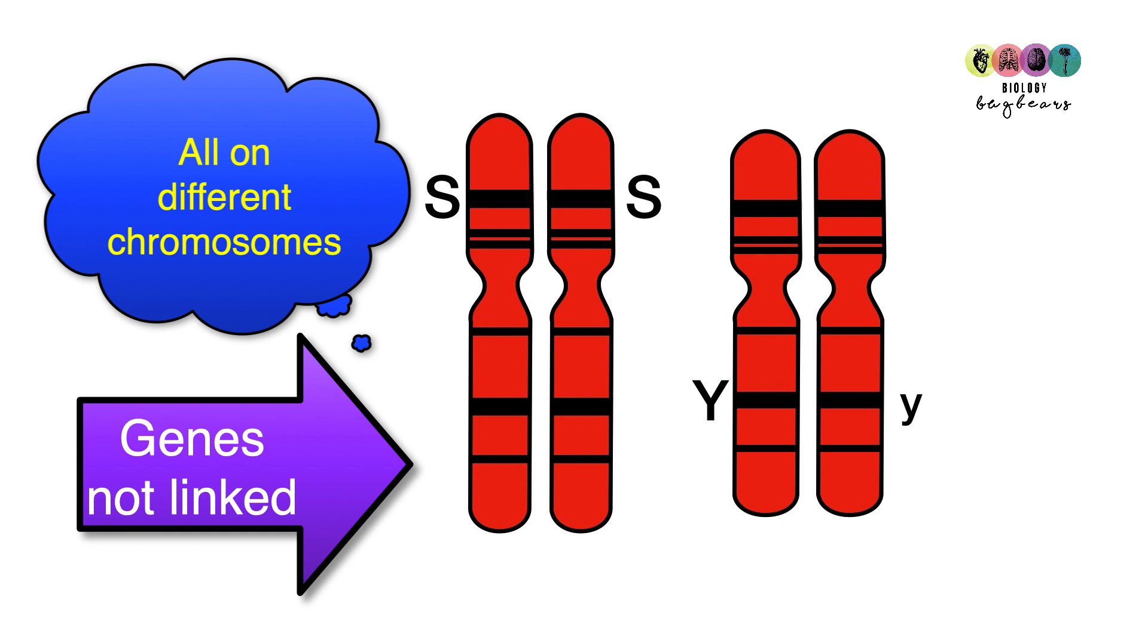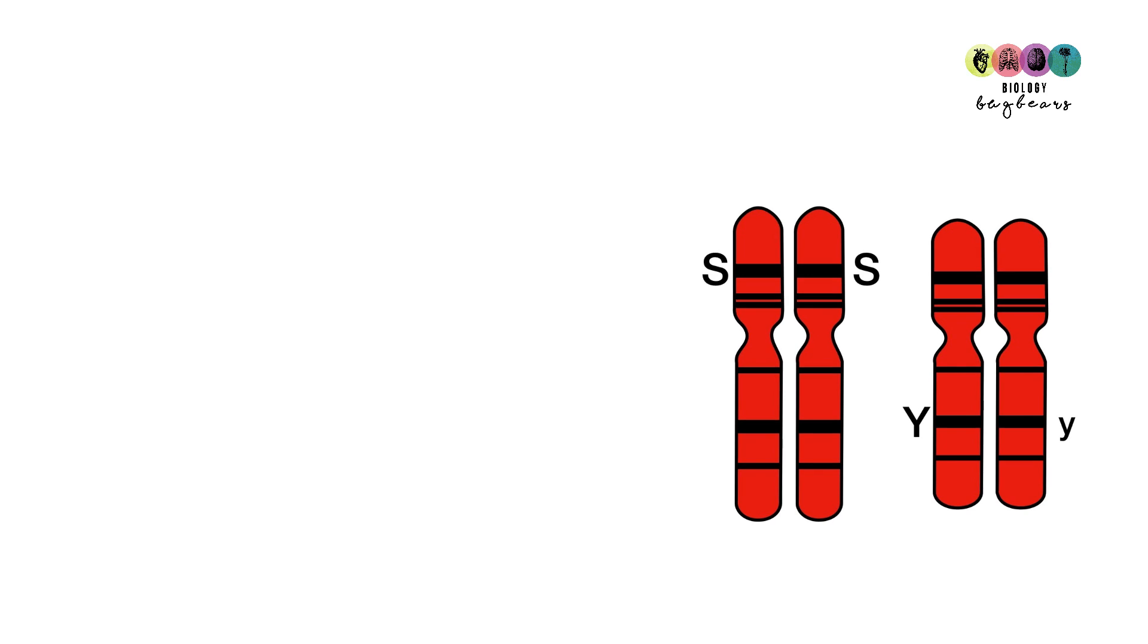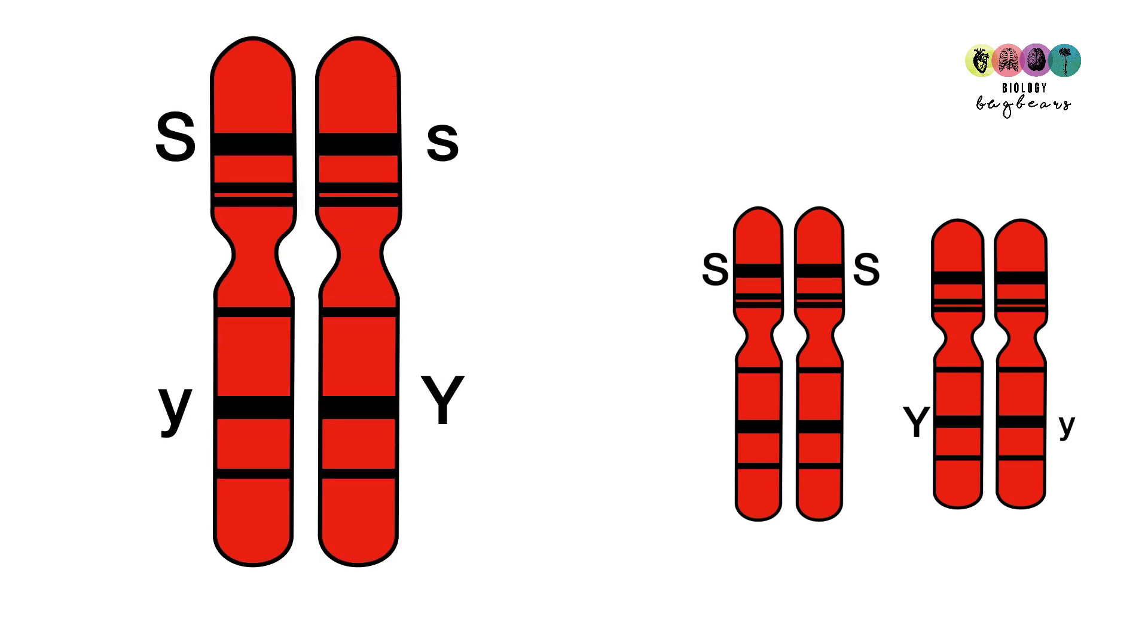So now if you look at this diagram, this time you've got one pair of chromosomes, and the S's and the Y's, so those two genes, are on the same chromosomes. But some of the alleles are linked. So the capital S, the dominant S, is linked. It's on the same chromosome as the recessive Y. And the recessive S is linked to the dominant allele for Y.